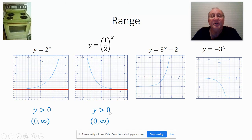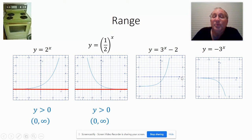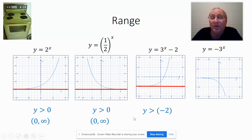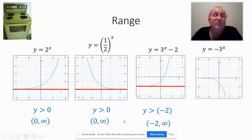What's different about the next one, if you'll notice, is this minus 2 — it moves it down. The asymptote is no longer at 0, but at negative 2. So I'm looking above all the values that are greater than negative 2. I'll write it y greater than negative 2. So instead of being 0 to infinity, it's negative 2 to infinity.